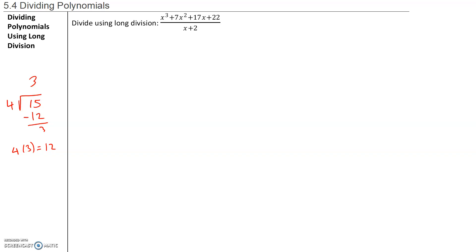We're going to use that same principle to do long division with polynomials. For our first example we have the polynomial x cubed plus 7x squared plus 17x plus 22, divided by x plus 2. Some vocabulary: the polynomial on the numerator, the one that is being divided, is called the dividend. The polynomial on the denominator, the one that's doing the dividing, is called the divisor. And whatever the result is, that is called the quotient.